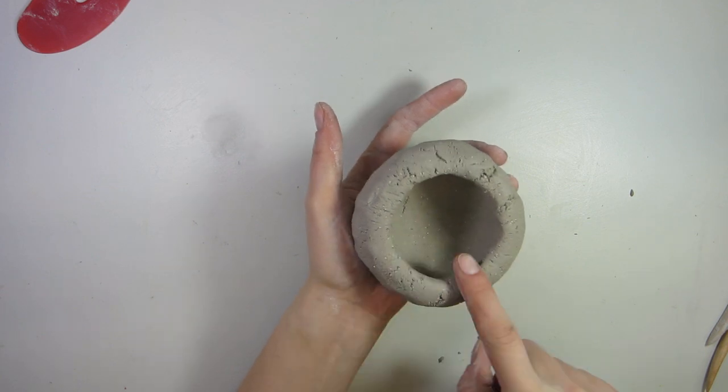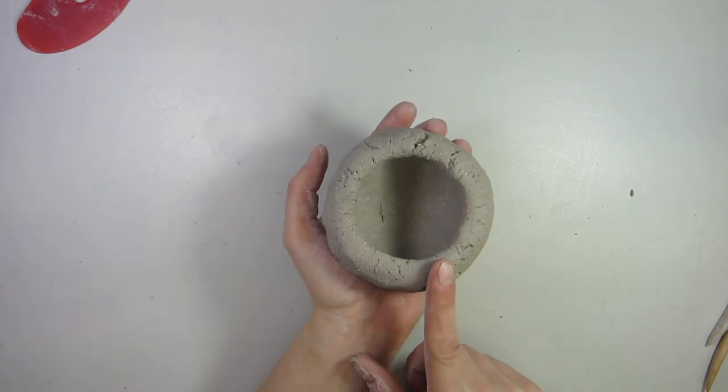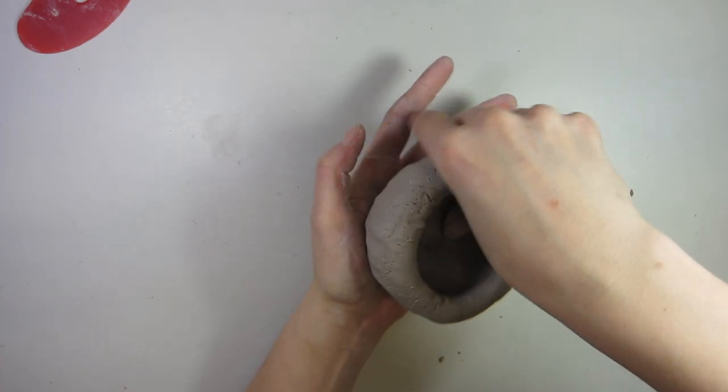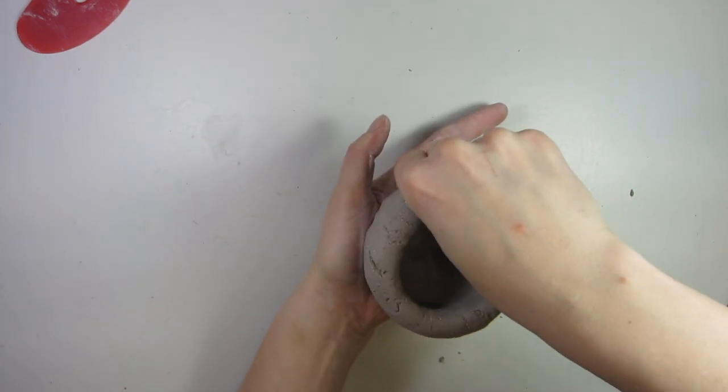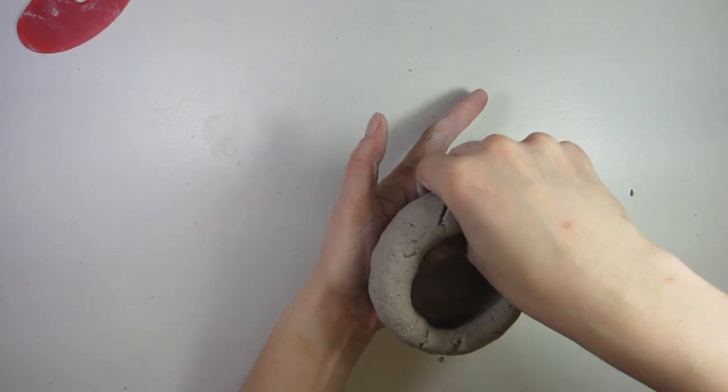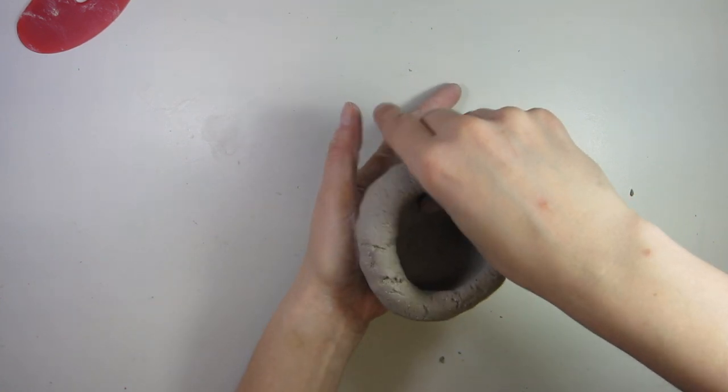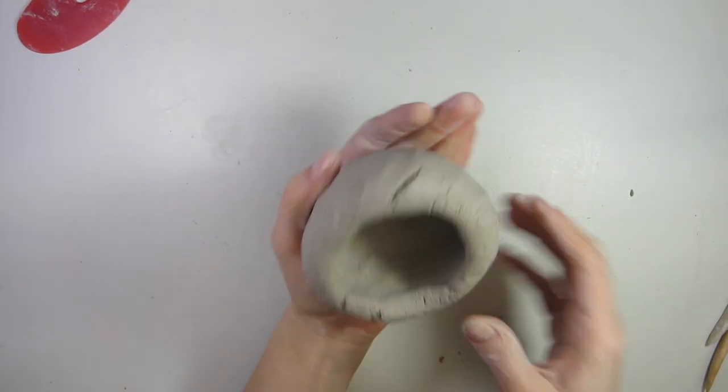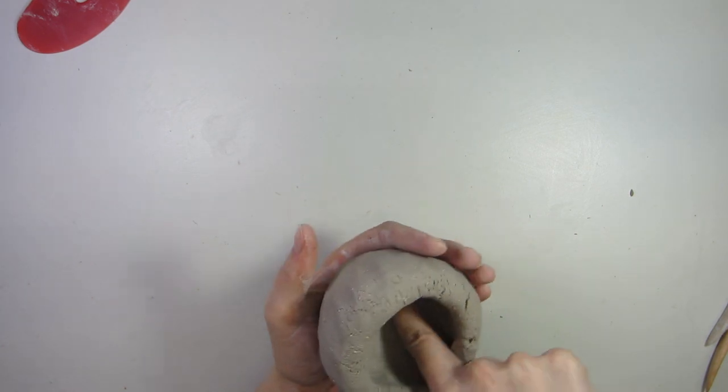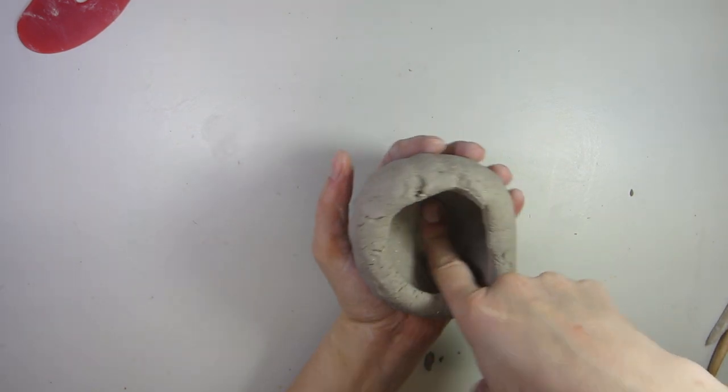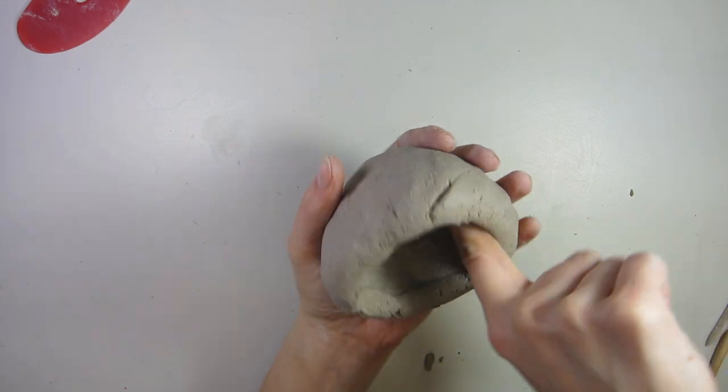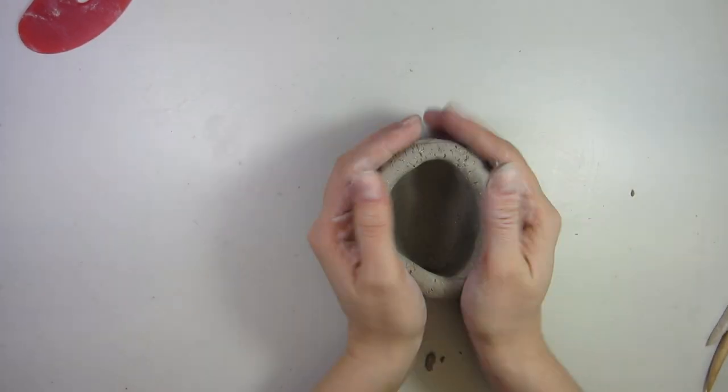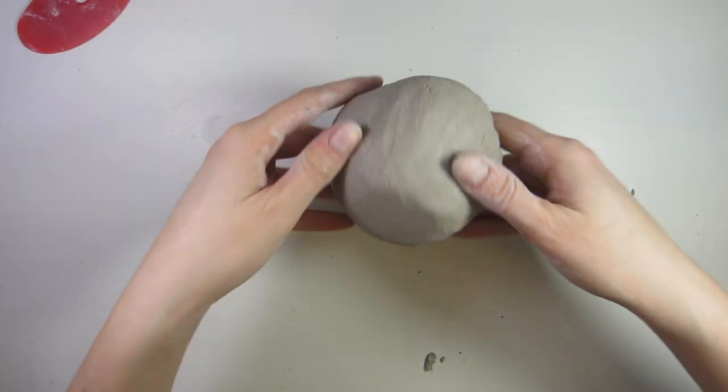I am going to leave the rim for last because you can already see there's a lot of stress on it. So I'm only focusing on the inside shape to make sure it looks nice and smooth and that the thickness is consistent. Now that I'm happy with it, I'm going to just press out that bottom a little further and use my finger to smooth the inside. And now tap it on the table so that way it can sit properly.